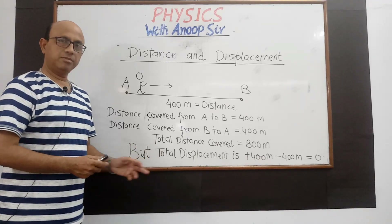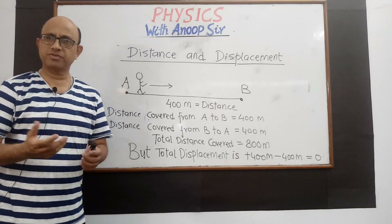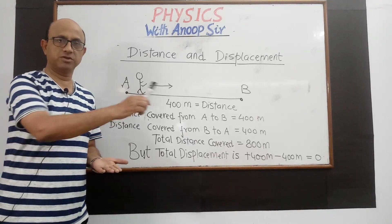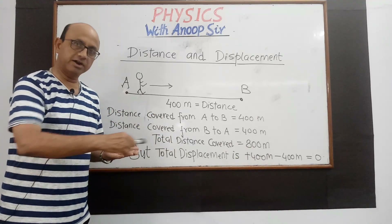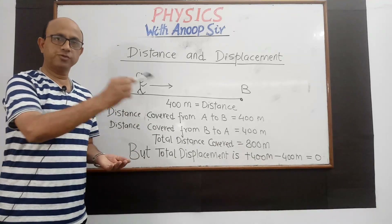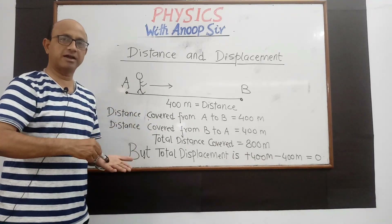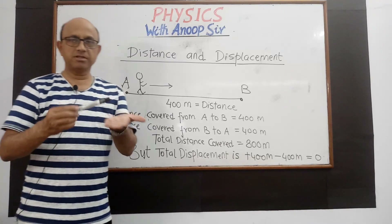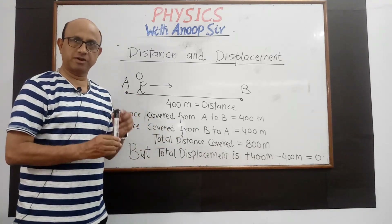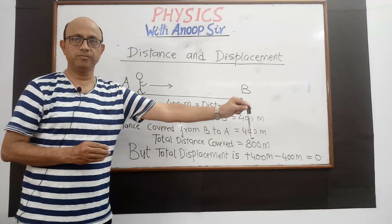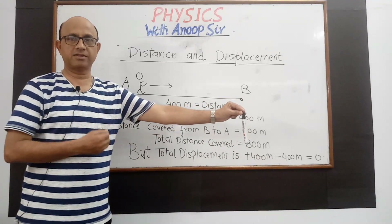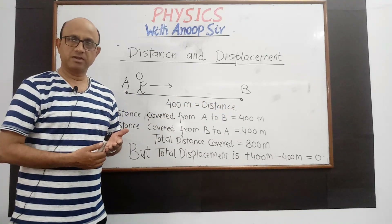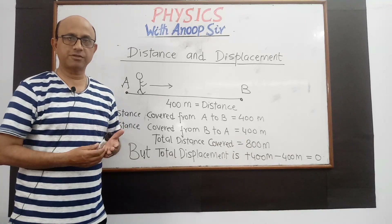अब अगर हम displacement की बात करें — displacement का मतलब है एक position से दूसरी position पर जाना। For example, यह pen यहाँ पर है, और मैं इसको यहाँ हटा दूँ तो मैंने pen को displace कर दिया। लेकिन अगर वापस यहाँ ले आऊं तो displacement खत्म हो गया।